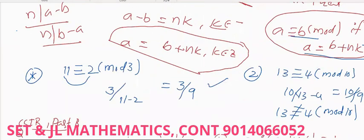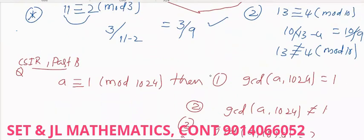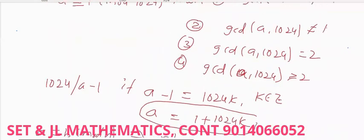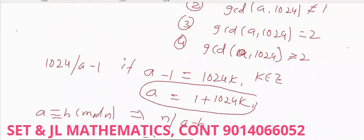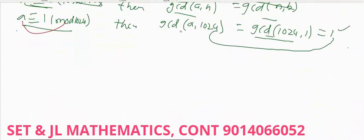So the first option is correct: GCD of A comma 1024 is equal to 1. The fourth option, which states GCD is greater than or equal to 2, is not correct. Only the first option is correct.